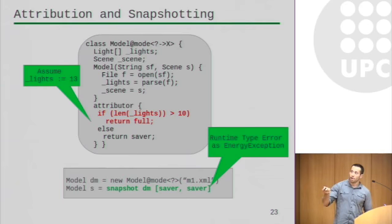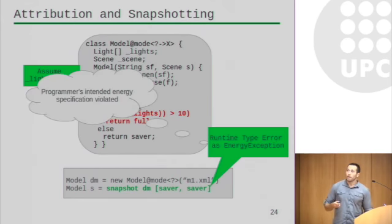And if, however, we get the full mode because this was actually larger than the programmer intended, we get a runtime type error that we call an energy exception. And now this runtime type error, this energy exception, is a violation of the programmer's intended energy specification of the way their objects behave.